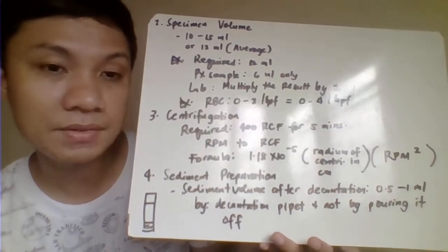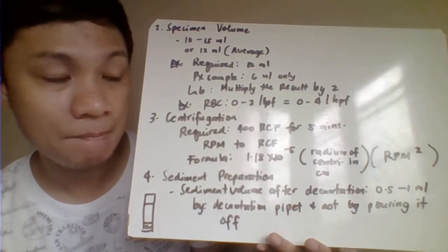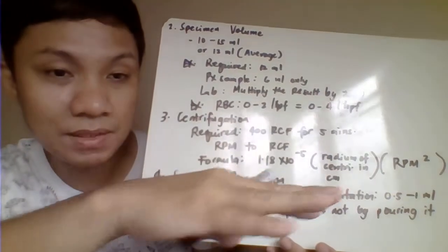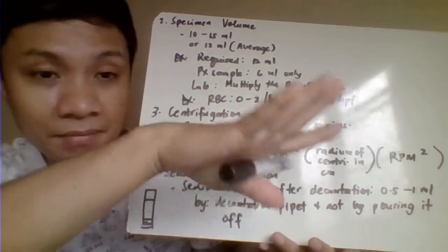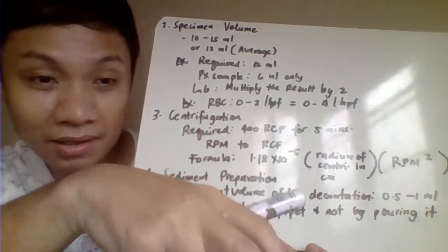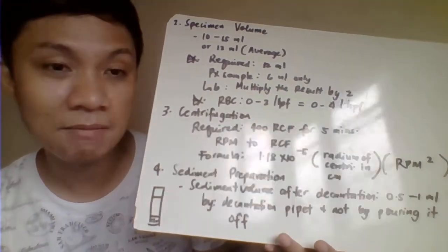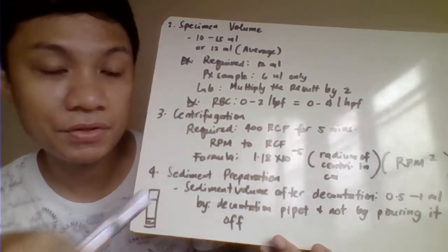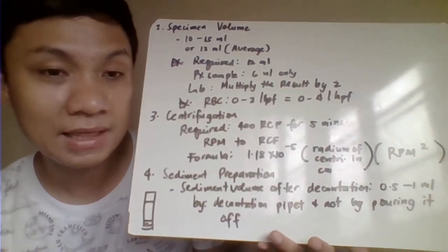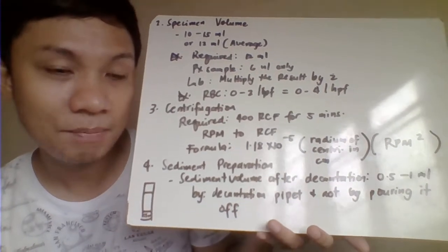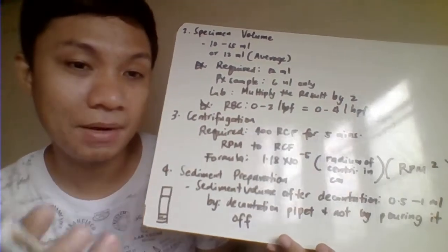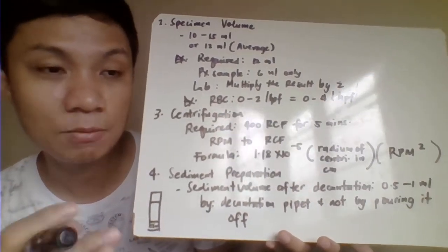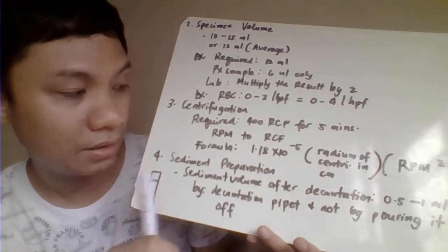Wait for the required centrifugation time. Do not manually brake the centrifuge to stop it early because this may disturb the packing of your sediments. If the packing is disturbed and you try to decant the supernatant, the sediments might mix back in with it. After centrifugation, you have the clear supernatant liquid on top and your concentrated sediment at the bottom — that is why we should not manually brake, to avoid disturbing the sediment. The objective is to recover that concentrated sediment.